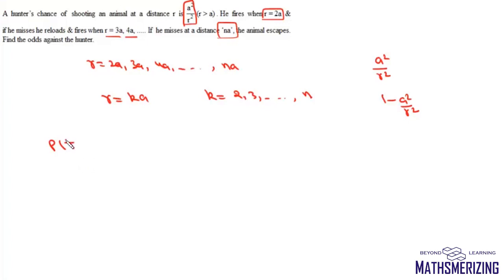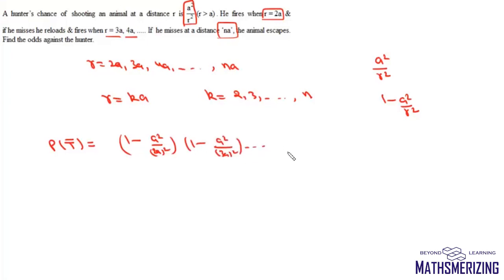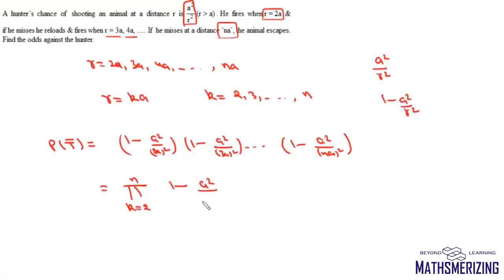The probability that the hunter misses the target at every shot is given by the product: (1 - a²/(2a)²) · (1 - a²/(3a)²) · ... · (1 - a²/(na)²). This is the product for k from 2 to n of (1 - a²/(k·a)²). The a² terms cancel out.